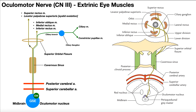On the left is the upper division and on the right is the lower division. Now both of these divisions — upper and lower — are then going to exit the cranium by moving through the superior orbital fissure. This is going to allow them to enter the orbit where the eyeball is, and therefore reach the extrinsic eye muscles.